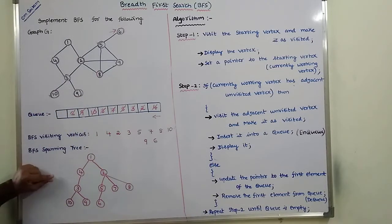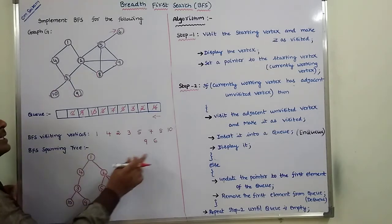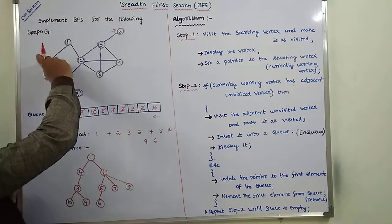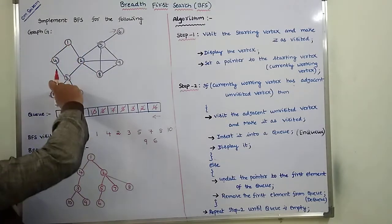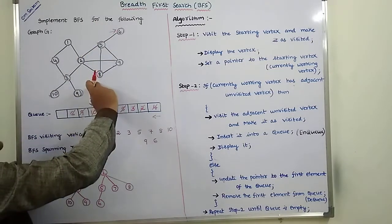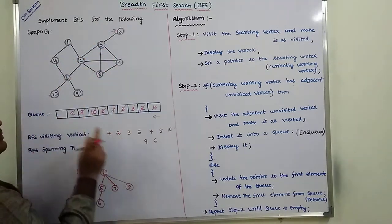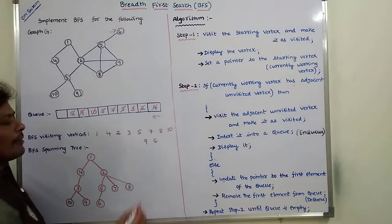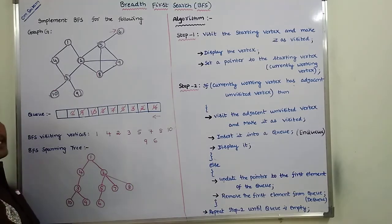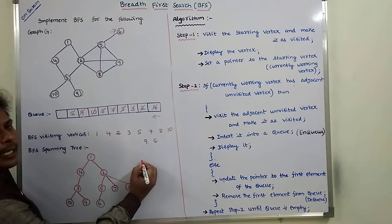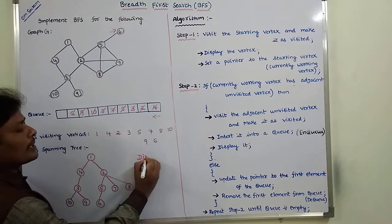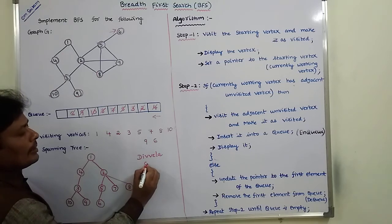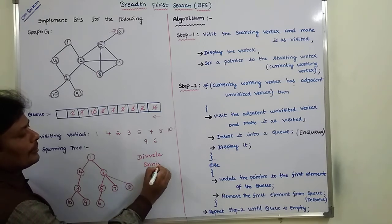This is the BFS spanning tree. In this order, all vertices are visited: 1, 4, 2, 3, 5, 7, 8, 10, 9, 6. This is the order we have to follow. Thank you for watching this video. If you like this video, please share it with your friends and classmates and subscribe to the channel.